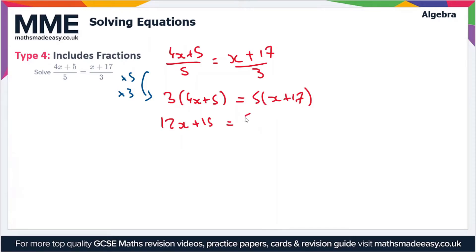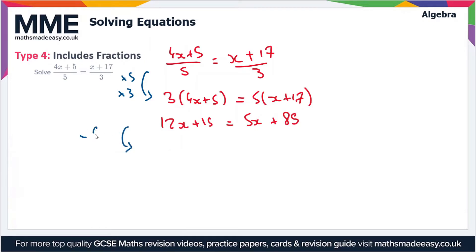So that's equal to 5 times x which is 5x, plus 5 times 17 which is 85. The next step is to get all the x terms on their own, so we subtract 5x from both sides of the equation.